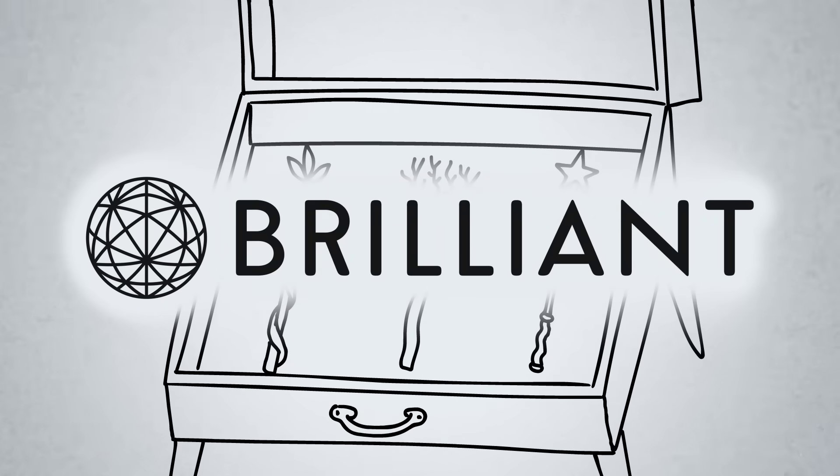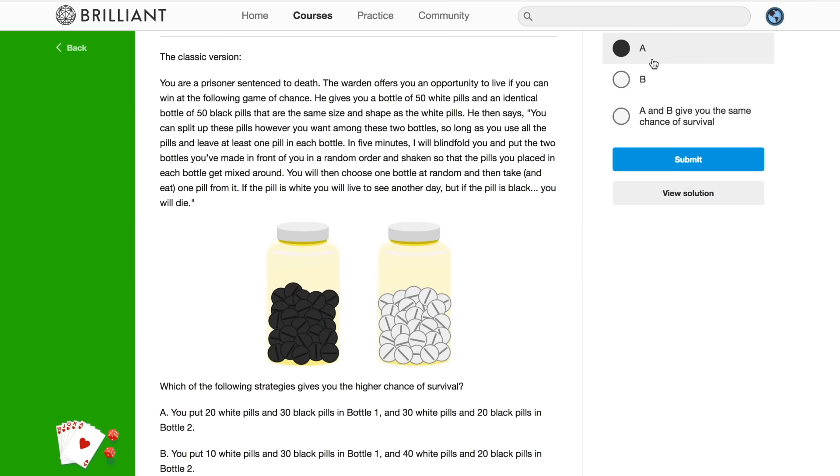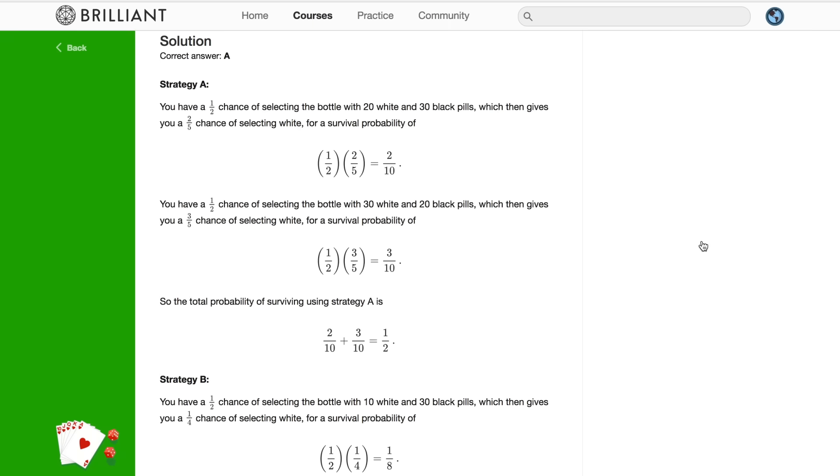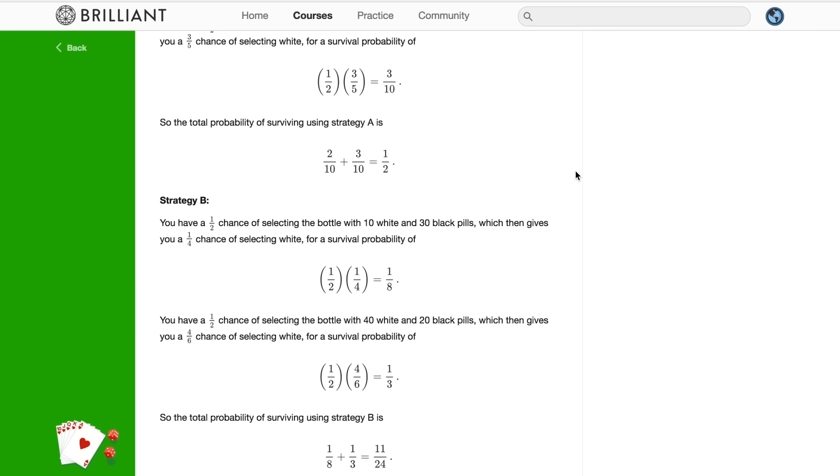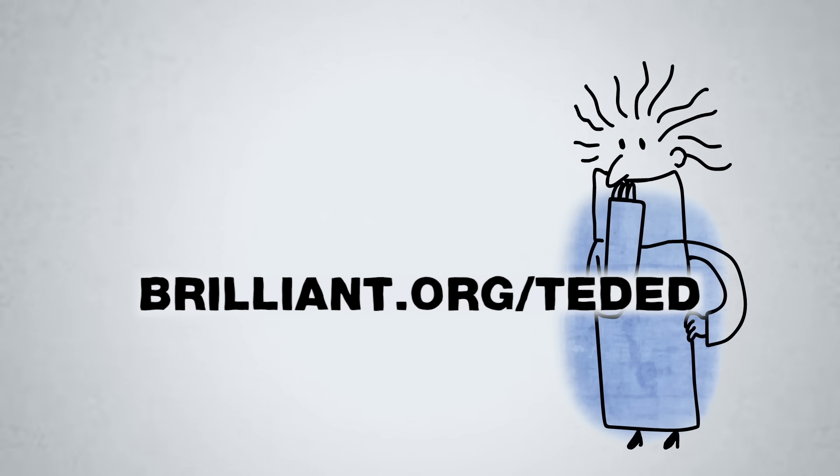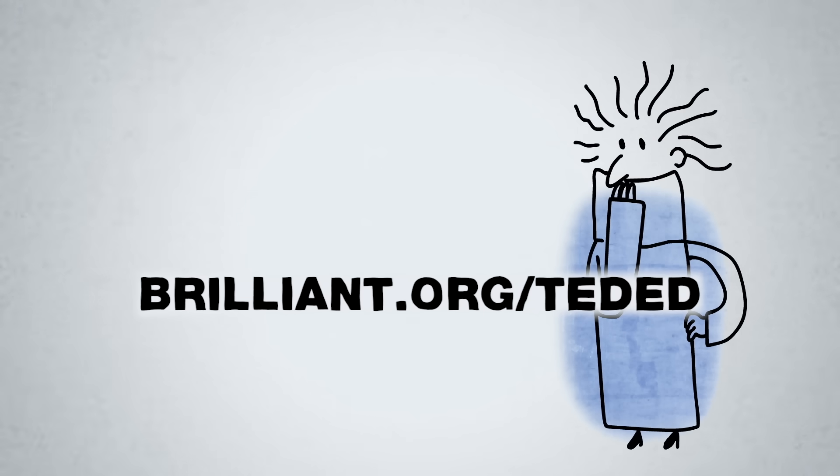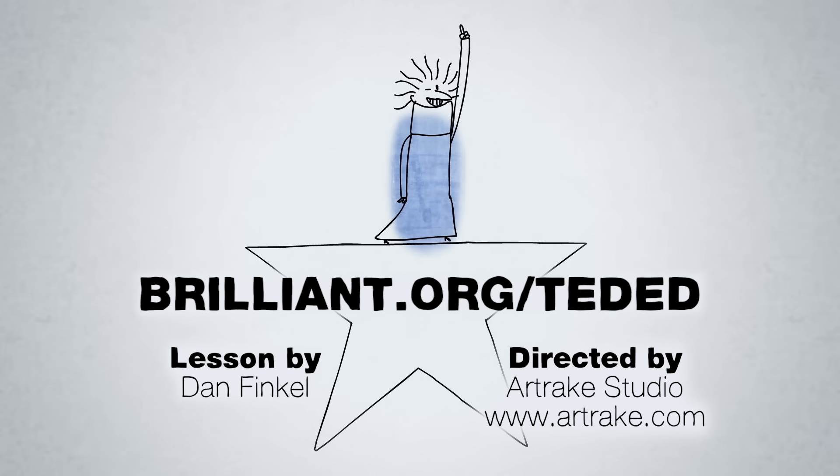Our sponsor, Brilliant.org, will help you develop the skills to survive any battle of wits life throws at you. They'll guide you on how to break down a problem into its component pieces, think clearly through each part, and build it back up to a conclusion. Hone your instincts at Brilliant.org slash TedEd, and use that link so they know we sent you. Better yet, the first 833 of you who sign up for a premium subscription will get 20% off the annual fee. And if you sign up for Brilliant using the link in the description below, Brilliant will email you the solution to their Apple Riddle.